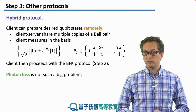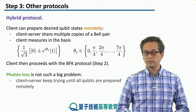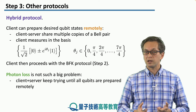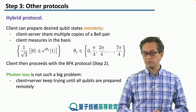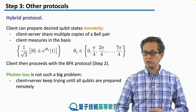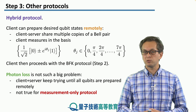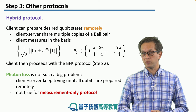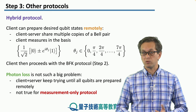A nice feature of this hybrid protocol is that photon loss is no longer a big deal. The client and server can keep trying until all qubits are prepared remotely — if we lose photons during Bell pair distribution, we just try again. This is not true for the measurement-only protocol, where each lost qubit ruins the quantum computation.